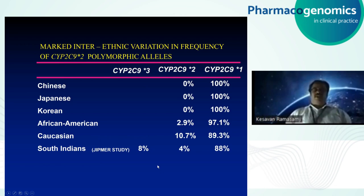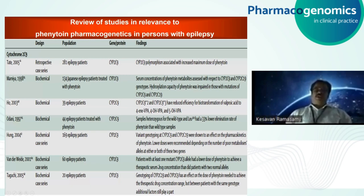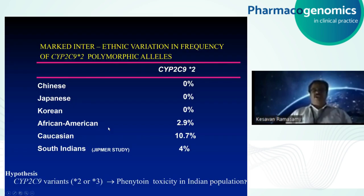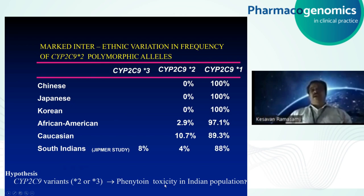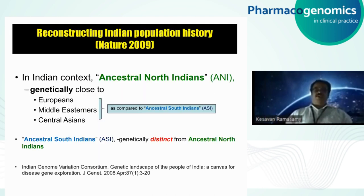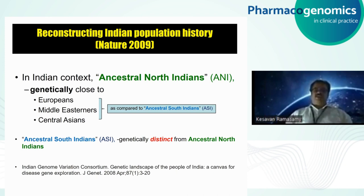There are many reports focusing on CYP2C9 and its relation to toxicity, studied in different populations including Caucasians. But the question is whether this variant causes toxicity in the Indian population, because ethnically we are different. An important article — the Reich et al. article on the genetic structure of Indian population history — clearly stated that there are two distinct populations in India: Ancestral North Indians, who carry Caucasian-like ethnicity, and Ancestral South Indians, who belong to Dravidian ethnicity. These two groups are genetically distinct, as reconfirmed by the Indian Genome Variation Consortium group.